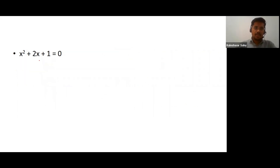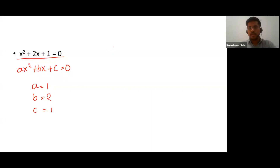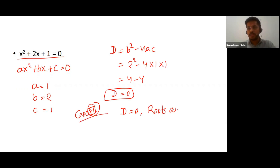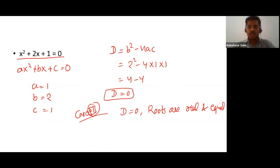Case three. Comparing with ax² + bx + c = 0: a = 1, b = 2, c = 1. Finding the discriminant: D = 2² − 4(1)(1) = 4 − 4 = 0. Case three: whenever D is equal to 0, both roots will be real and equal. Every quadratic equation has exactly two roots, and when D equals 0 those roots are real as well as equal. Now let's look at how to actually find the roots.